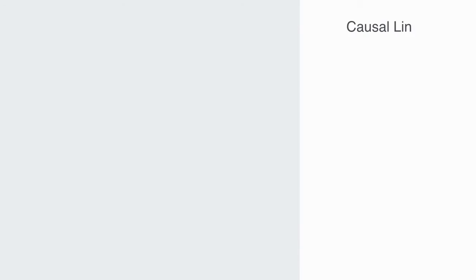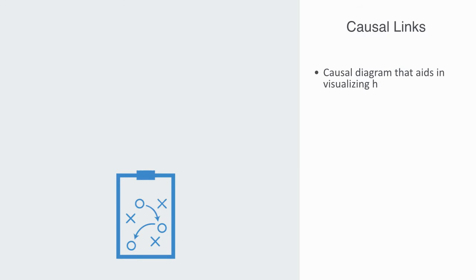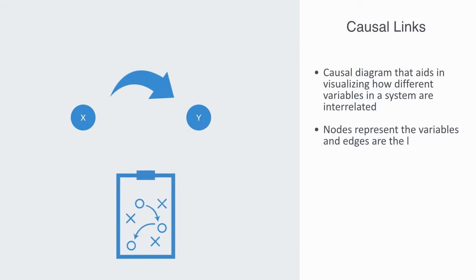Causal loop diagrams is a causal diagram which aids in visualizing how different variables in a system are interrelated. The diagram consists of a set of nodes and edges. Nodes represent the variables and edges are the links that represent a connection or a relation between the two variables.